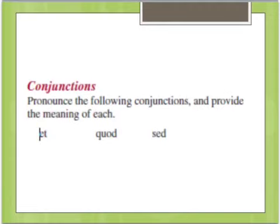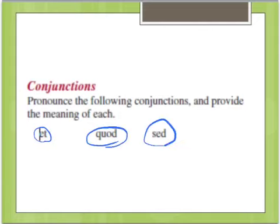Lastly, we learned conjunctions in this chapter. Conjunctions are words that join clauses, or join adjectives, verbs, or nouns together. We have: 'et,' which means and; 'quod,' which means because; and 'sed,' which means but.